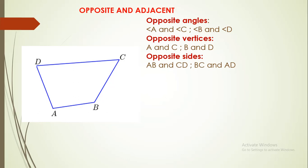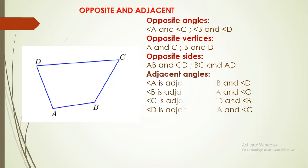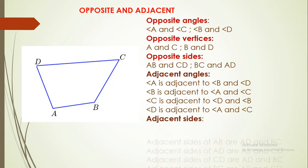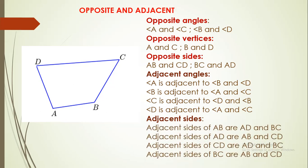Opposite sides: AB is opposite to CD, and BC is opposite to AD and vice versa. Next, adjacent angles. Angle A is adjacent to angle B and angle D. The same way, angles A and C are adjacent to angle B, and angles D and B are adjacent to angle C, and angles A and C are adjacent to angle D. Adjacent sides of AB are AD and BC. AB and CD are adjacent to AD. AD and BC are adjacent to CD. AB and CD are adjacent to BC.